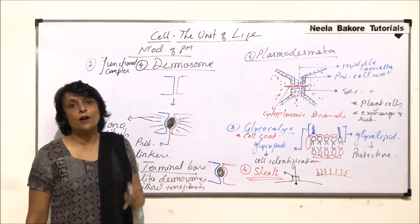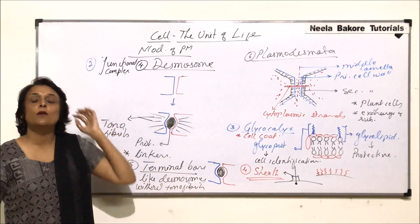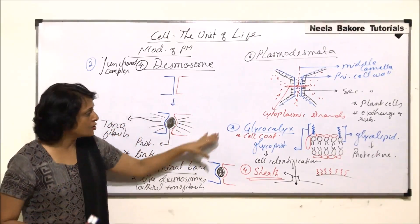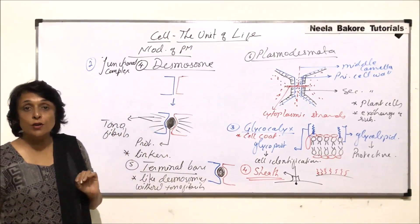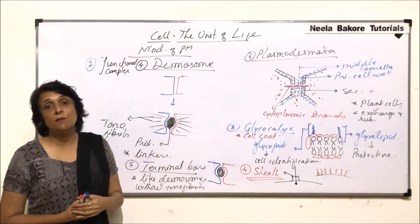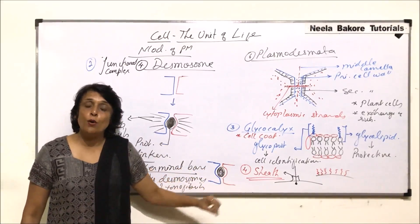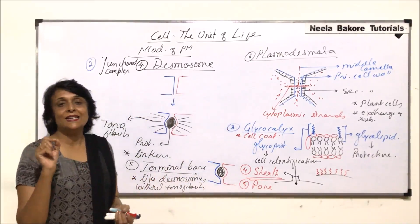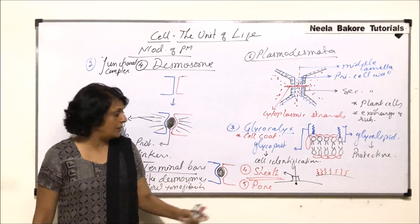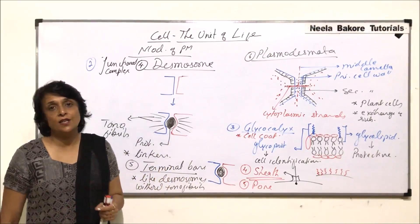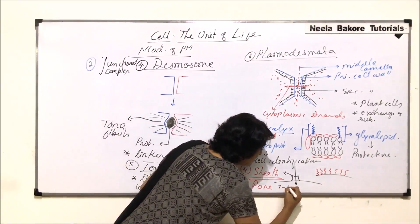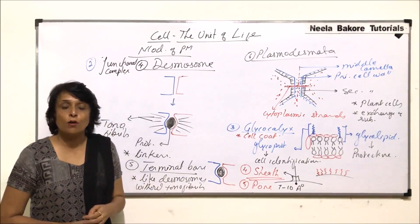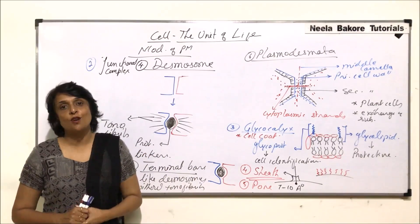These are the modifications of the plasma membrane, classified based on where they are found — on the outer free surface, between adjacent cells, or as other modifications. We can also include pores. The plasma membrane has pores, the details of which are normally discussed when talking about nuclear pores. Pores are tiny structures where channel proteins are present, allowing substances to enter the cell. The pore size is 7 to 10 angstroms, as given by Daniele and Davson, previously discussed in the sandwich model of plasma membrane.